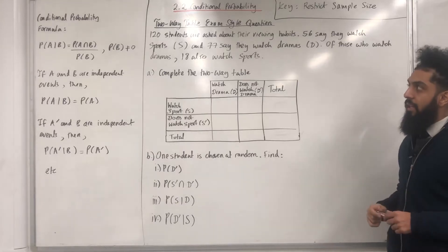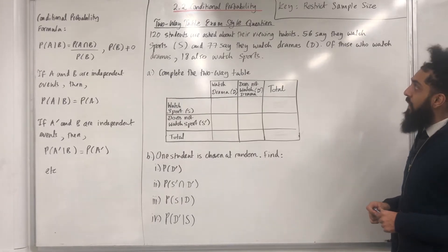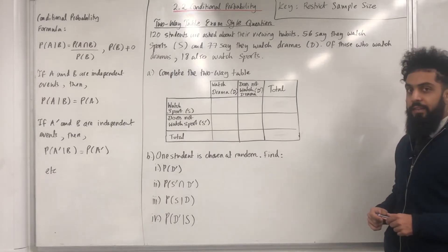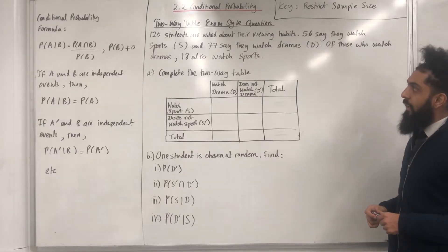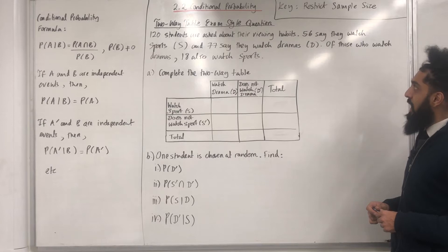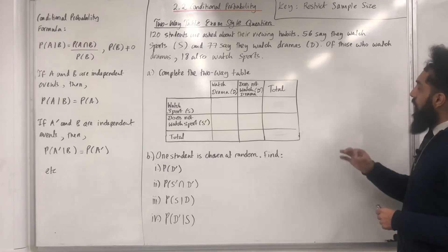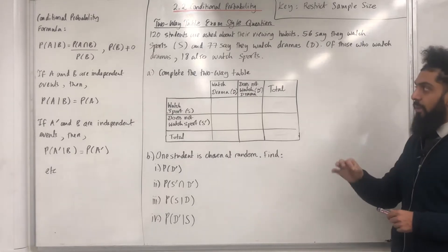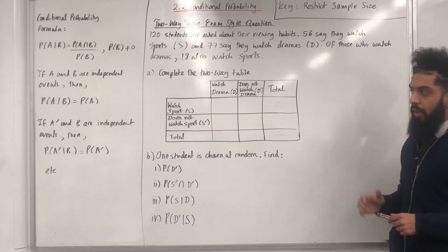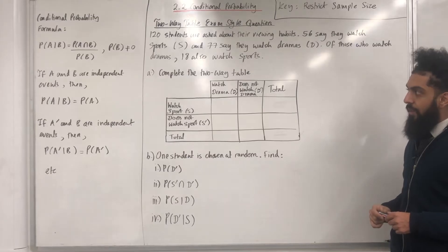One hundred and twenty students are asked about their viewing habits. Fifty-six say they watch sports, represented by S. And seventy-seven say they watch dramas, represented by D. Of those who watch dramas, 18 also watch sports. Part A: complete the two-way table.